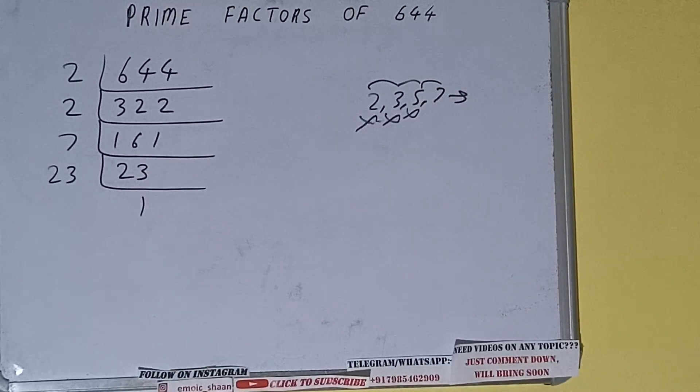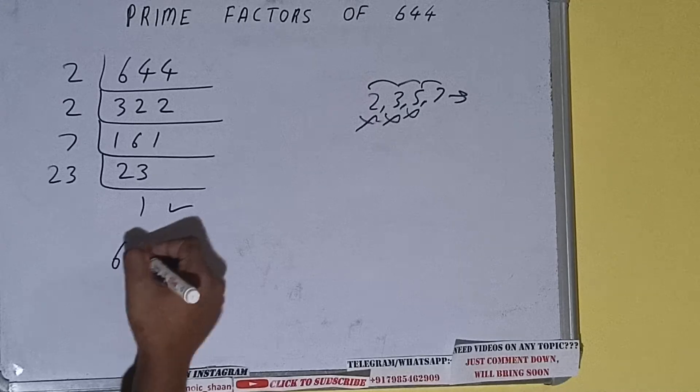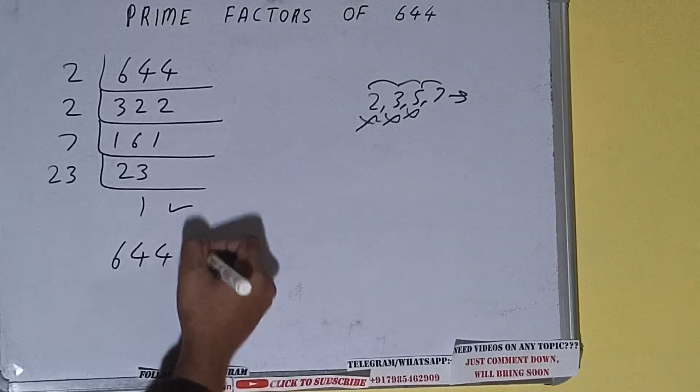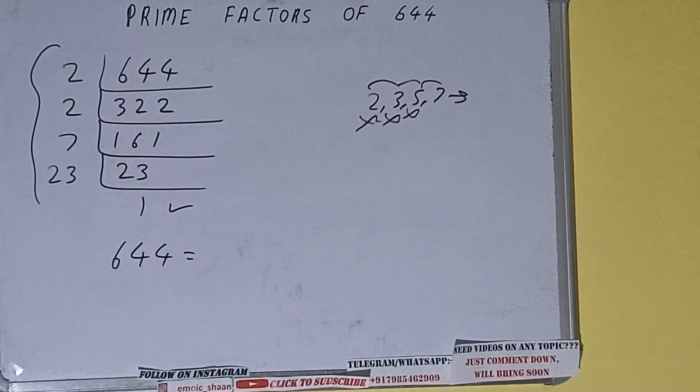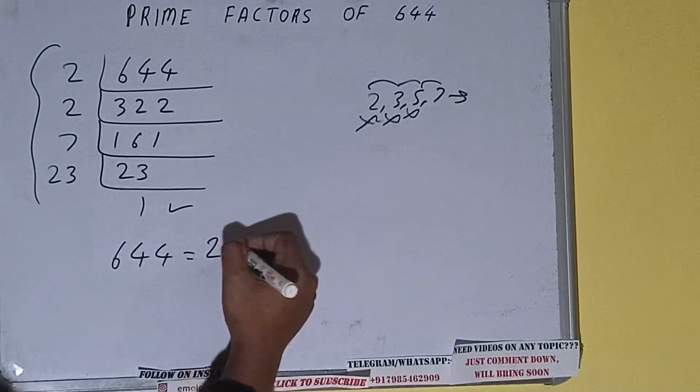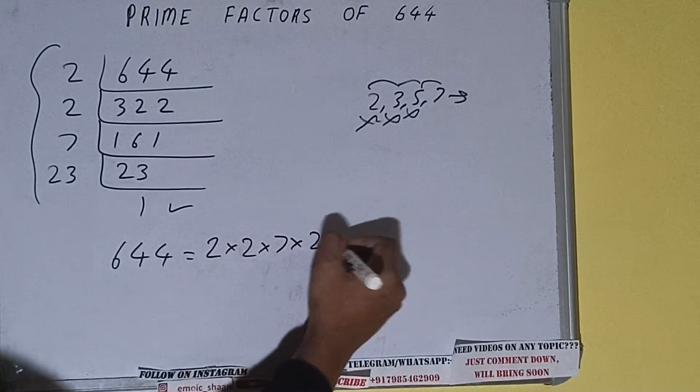Once we get 1, we need to stop and do one last thing. That is, prime factor of 644 is equal to whatever we have on the left-hand side: 2×2×7×23. That will be the answer.